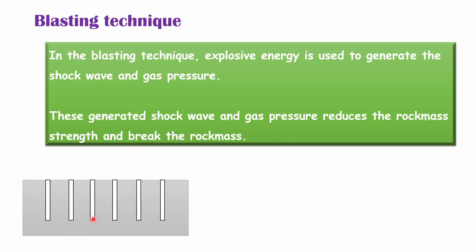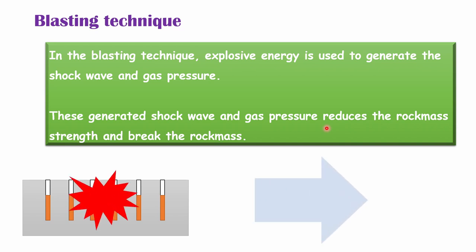By providing certain spacing, we have drilled six drill holes. In the drill holes, we have to provide the explosive charge. For blasting, we have to confine the explosive by providing some stemming in this portion. Then by detonating, we will do the blasting and the explosive energy will convert into the shock wave and gas pressure, which will reduce the rock mass strength and break the rock mass. So we can define the blasting technique as a three-step process: the first one is drilling, the second one is charging, and the third one is blasting.